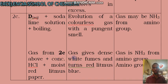Moist red litmus paper. Gas gives dense white fumes and turns red litmus blue. Gives dense white fumes with conch HCl. At this point, what do you infer? You infer that...